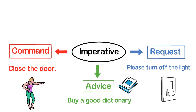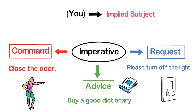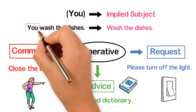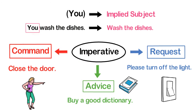Keep in mind that 'You' is an implied subject in the case of imperative sentences. For instance, 'You wash the dishes' becomes 'Wash the dishes.' As you see, we do not mention the subject 'You' — it is an implied subject.